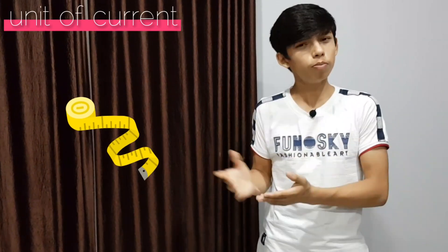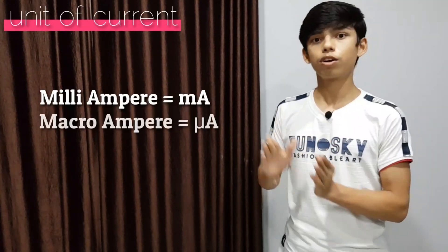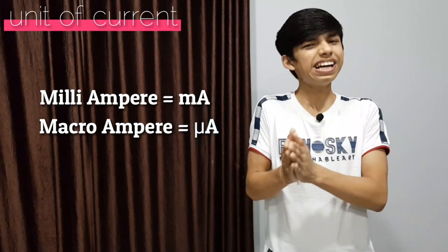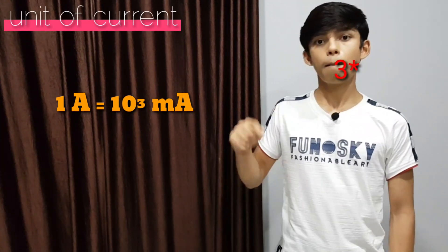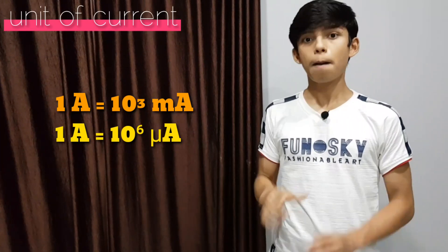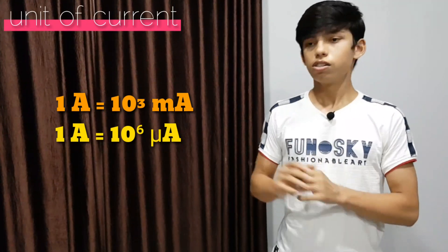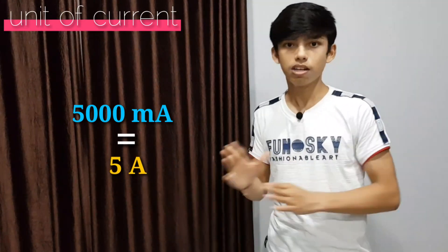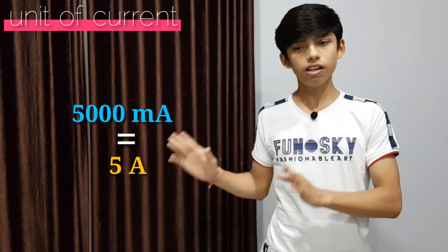Now let's talk a bit more about this unit. We know that when we measure length, we have kilometers, meters, and centimeters — if the distance is large we use kilometers, and if small we use centimeters. Similarly here, we have milliampere and microampere. Milliampere is mA and microampere is μA — mu is a Greek letter. 1 ampere equals 10 to the power 3 milliampere, and 1 ampere equals 10 to the power 6 microampere. For instance, if a circuit has a current of 5000 milliampere, it means the current is 5 amperes because 1 ampere equals 10 to the power 3 milliampere.